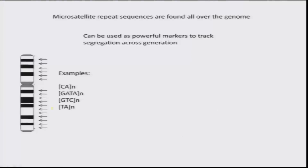In all our chromosomes, we have a large number of repeats called microsatellite repeats. They vary in size and variation in the population. For example, it could be a CA repeat repeated many times — 7 times, 20 times, 8 times — varying in the population. From telomere to telomere, every chromosome has these repeats spread over it, and we use them as markers to track segregation across generations. You can really say which part of your chromosome has come from which grandparent.